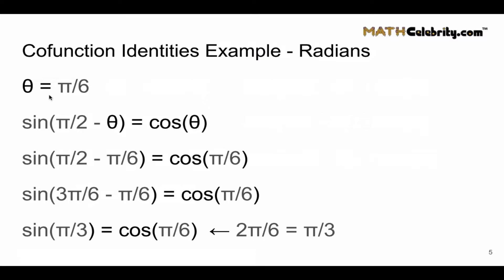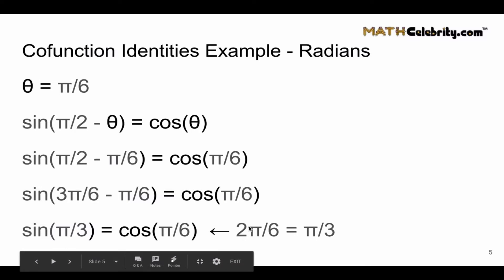We'll let theta equal pi over 6. Using our sine-cosine co-function identity, sine of pi over 2 minus theta equals cosine of theta. Plugging in pi over 6 for theta, we simplify pi over 2 by multiplying top and bottom by 3 to get 3 pi over 6, then subtract pi over 6 to get 2 pi over 6, which simplifies to pi over 3. So the sine of pi over 3 equals the cosine of pi over 6.